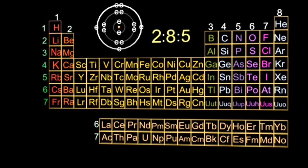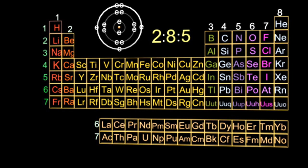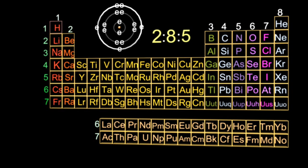So which element is this? Hopefully, you chose phosphorus. It's in group five in the third period, which is phosphorus, P.